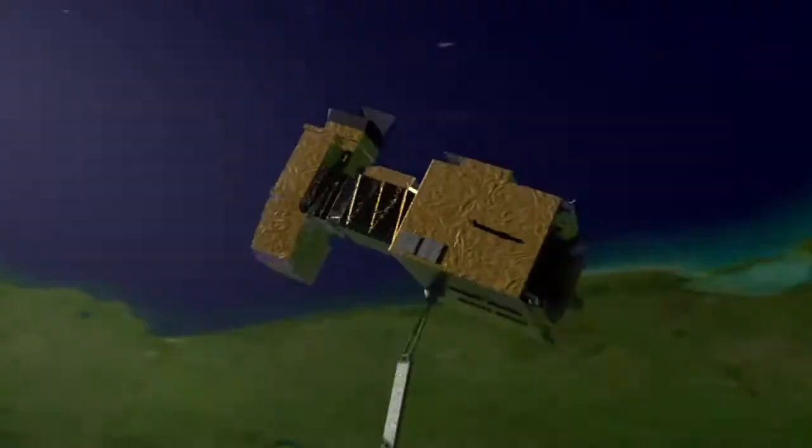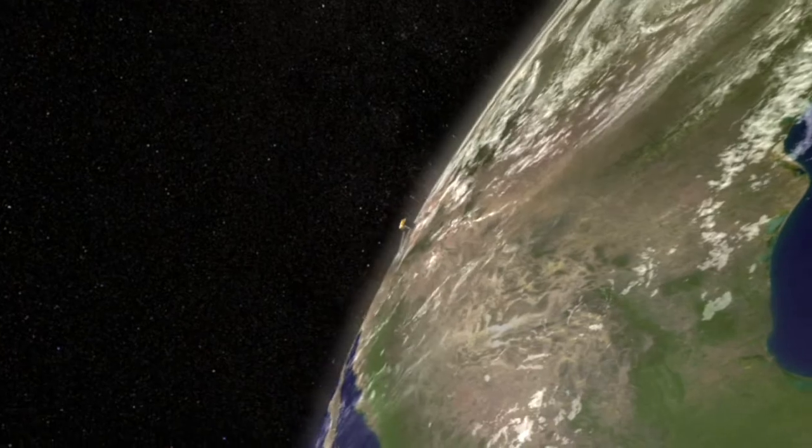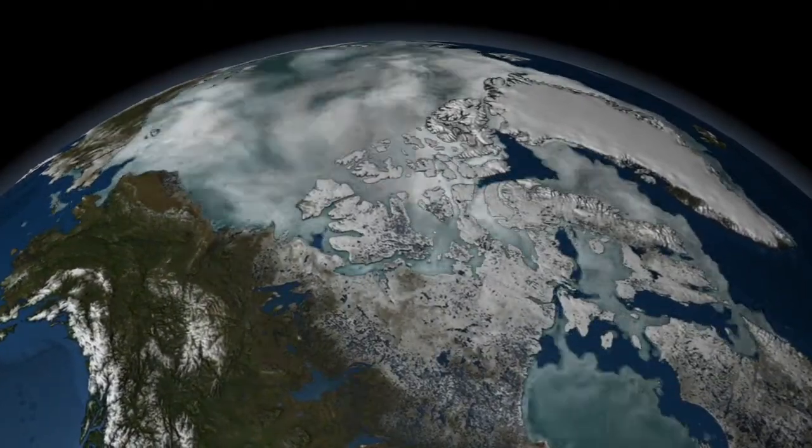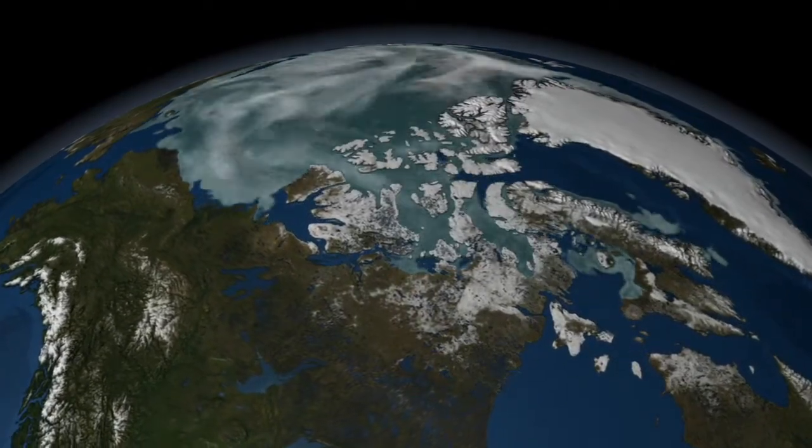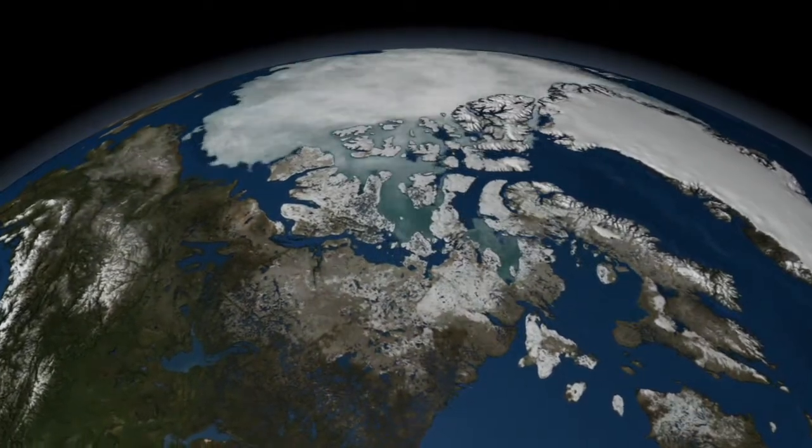As NASA scientists improve their understanding and predictions about climate change, NASA satellites provide critical data about what's happening on our planet today, real-life observations scientists use to hone their predictions. And NASA gets a global view of three major pieces of the climate puzzle.